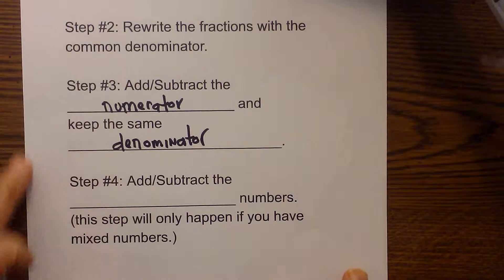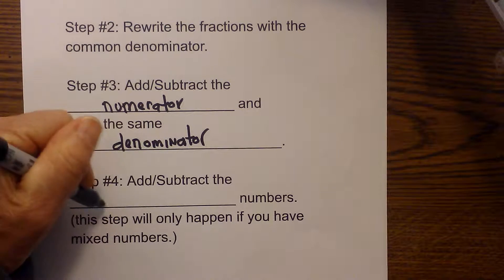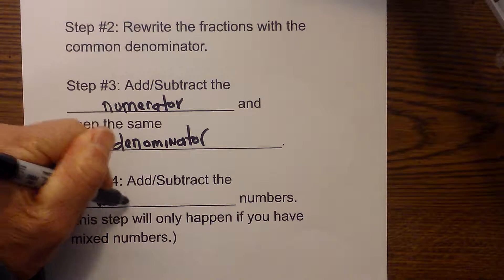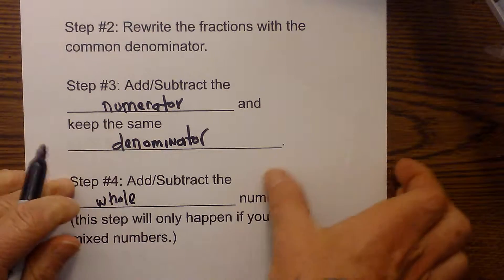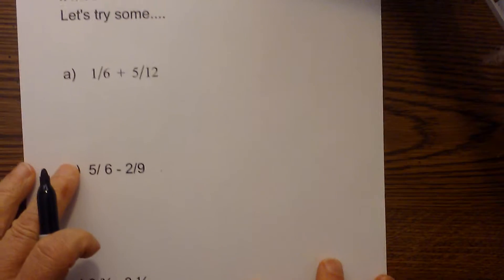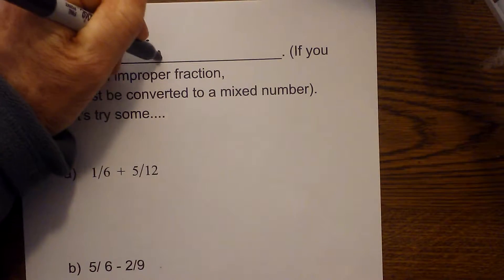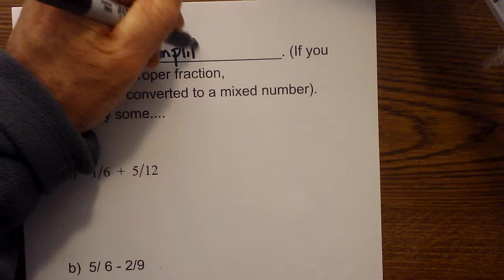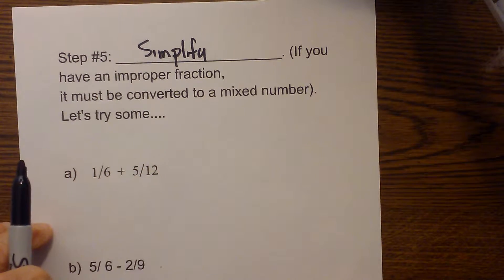Step four is you add and subtract the whole numbers. Last but not least, you simplify. Step five is you simplify. If you have an improper fraction, it must be converted to a mixed number.